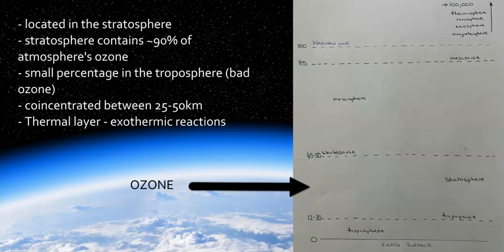It begins between 25 to 30 kilometers up and extends up to about 45 or 50 up to the stratopause. This is a thermal layer and the ozone layer actually creates an increase in temperature due to the reactions and actually heats the stratosphere as you go higher in altitude. This is a reverse or an inversion to what happens in the troposphere as it gets colder as you go higher in altitude.